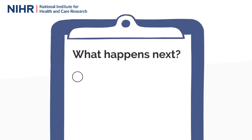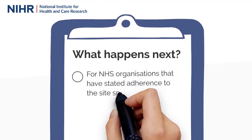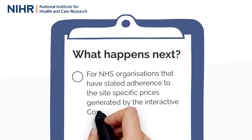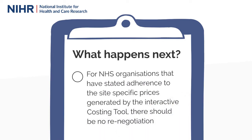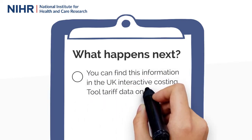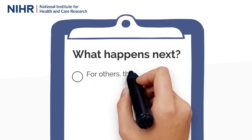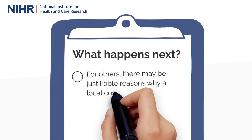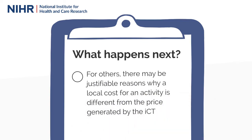What happens next? For NHS organisations that have stated adherence to the site specific prices generated by their interactive costing tool, there should be no renegotiation. NHS organisations in Scotland and Wales operate in a single cost model and Northern Ireland is working to endorse this model. You can find this information in the UK interactive costing tool tariff data on the NIHR website. For others, there may be justifiable reasons why a local cost for an activity is different from the price generated by the ICT, and the national contract value review approach is working to ensure these are visible upfront.